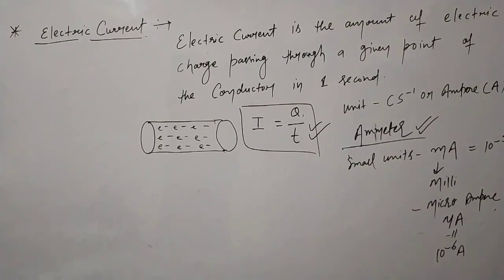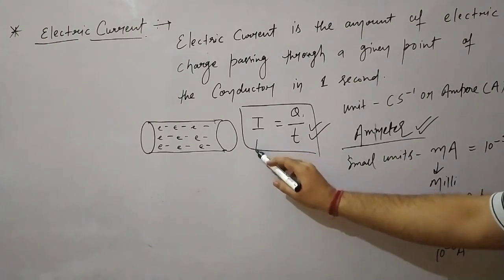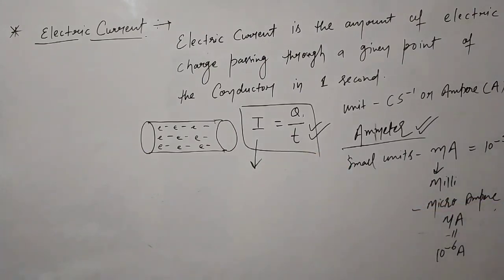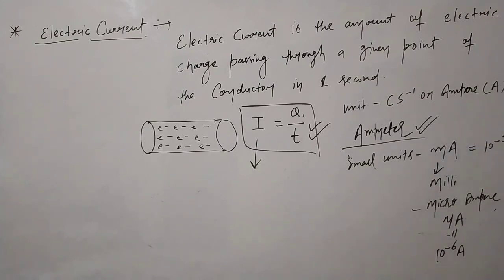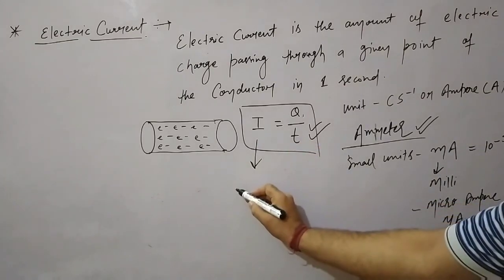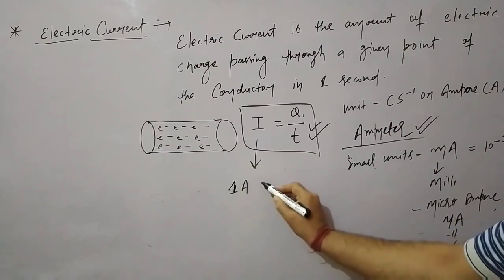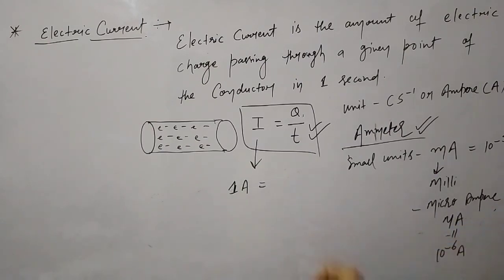Examples of conductors include silver, copper, aluminum, and many other substances. The human body is also a conductor. Why are they conductors? Because they have a large number of free electrons.